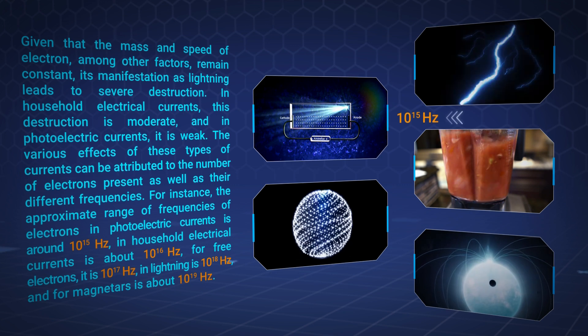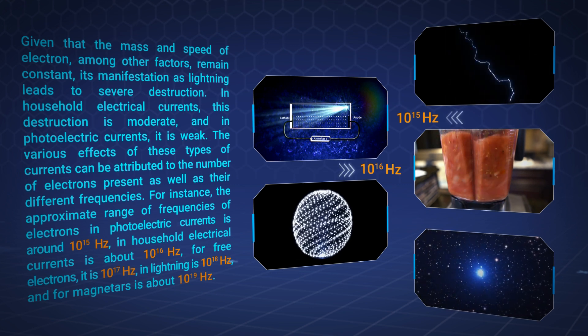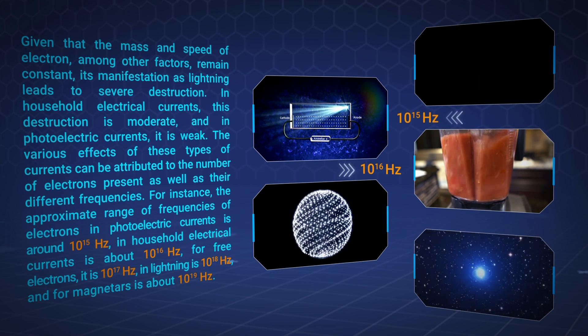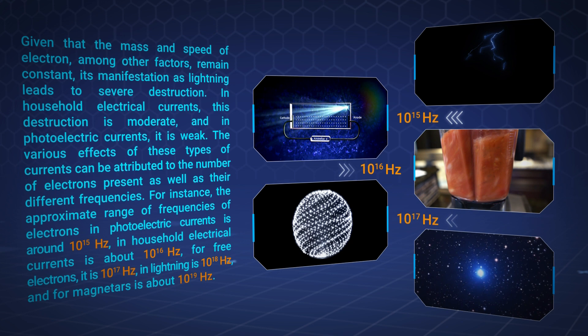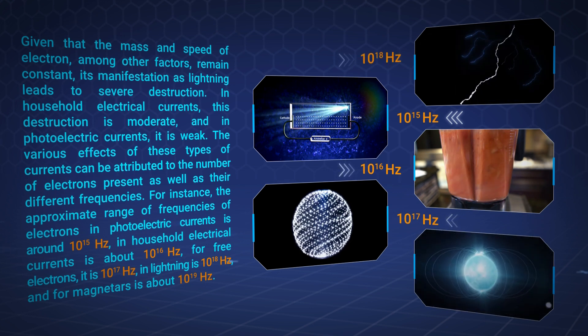In household electrical currents is about 10 to the power of 16 Hertz. For free electrons, it is 10 to the power of 17 Hertz. In lightning is 10 to the power of 18 Hertz, and for magnetars is about 10 to the power of 19 Hertz.